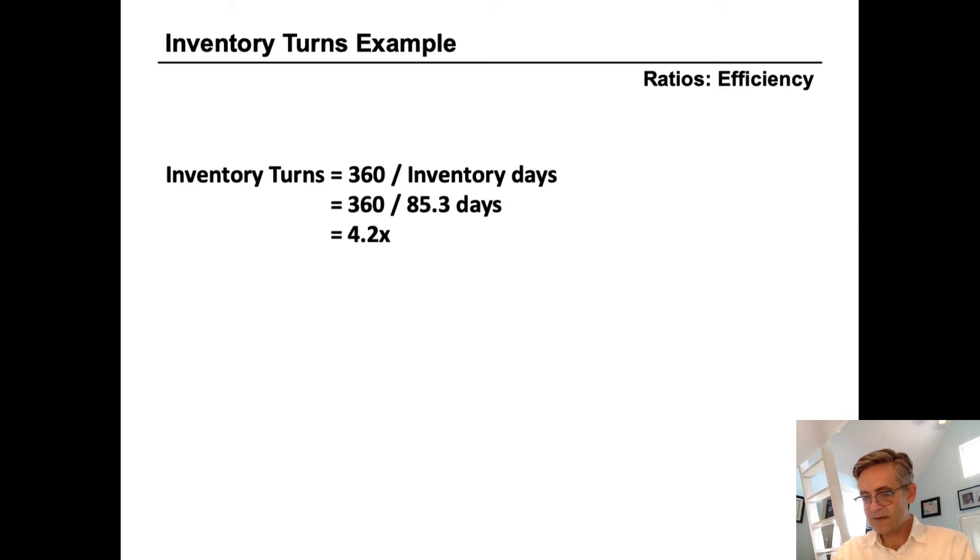This means that Hasbro sells through all of their inventory a little more than four times a year. The higher the number of turns in general, the better. As long as the company has enough inventory to meet consumer demand, the faster it can turn its inventory into cash, the better.